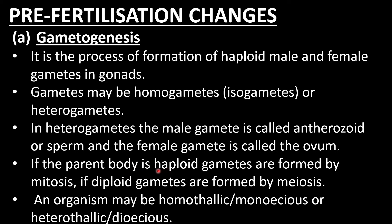If the parent body is haploid, gametes are formed by mitosis, which is an equational division. If the parent body is diploid (2N), gametes are formed by meiosis, which is a reductional division — so haploid gametes are formed from the diploid parent body through meiosis.